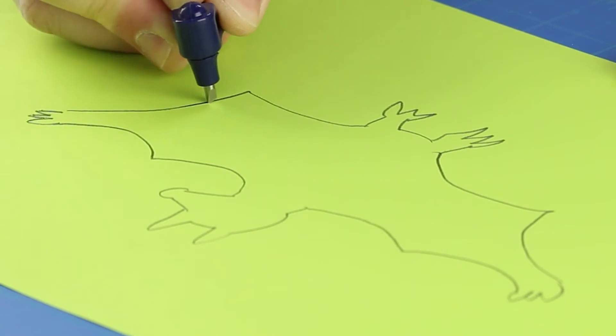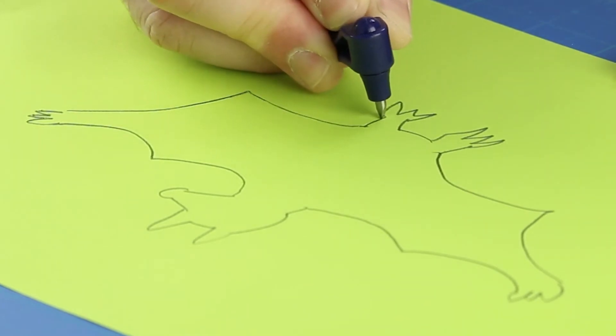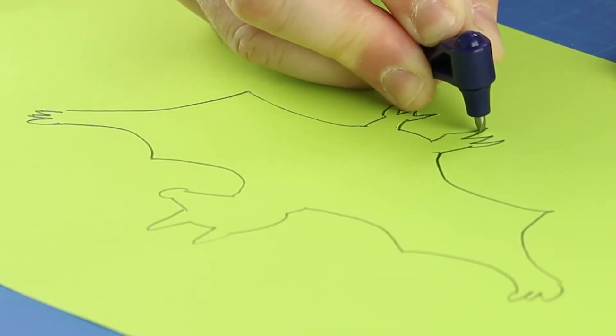When you come to a sharp corner, simply stop, move the tool head towards the new direction until the blade turns, and continue cutting.